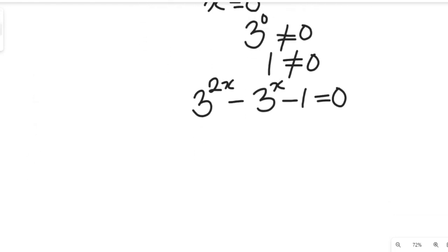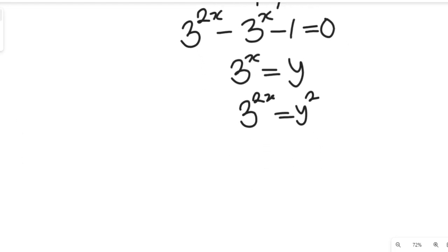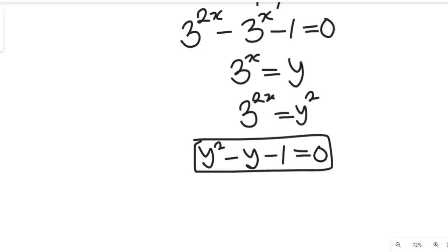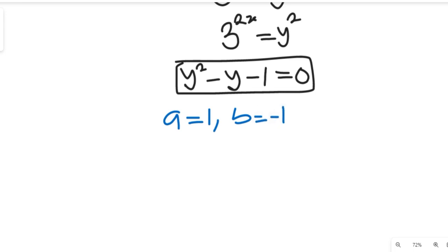To solve this quadratic equation, we let 3 to the power of x equal y. If 3 to the power of x equals y, then 3 to the power of 2x equals y squared. Substituting, we get y squared minus y minus 1 equals 0. Using the quadratic formula, a equals 1, b equals negative 1, and c equals negative 1.